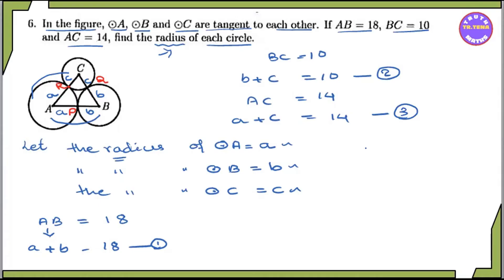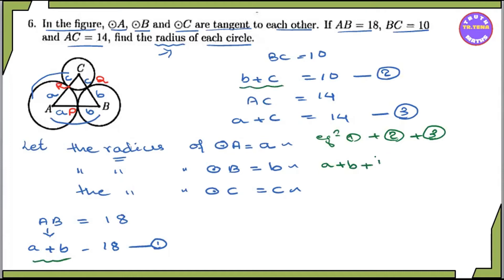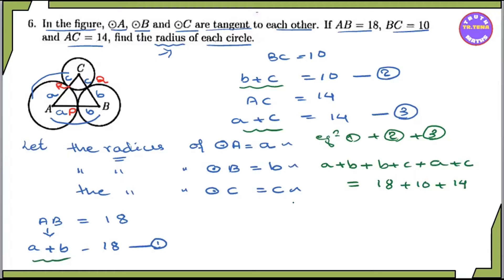Now we add equation 1 plus equation 2 plus equation 3. The left-hand side gives us a plus b, plus b plus c, plus a plus c. The right-hand side is 18 plus 10 plus 14. So 2a plus 2b plus 2c equals 42, giving us equation 4: a plus b plus c equals 21.